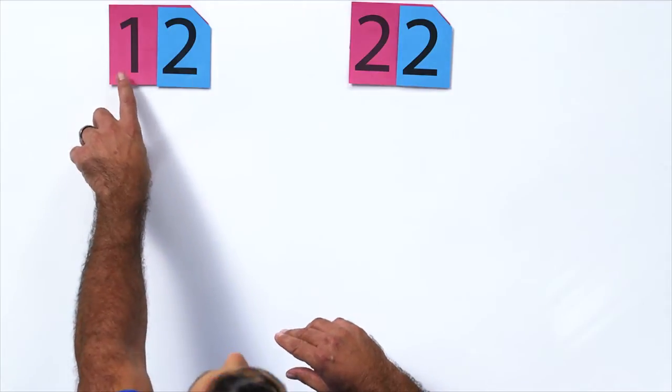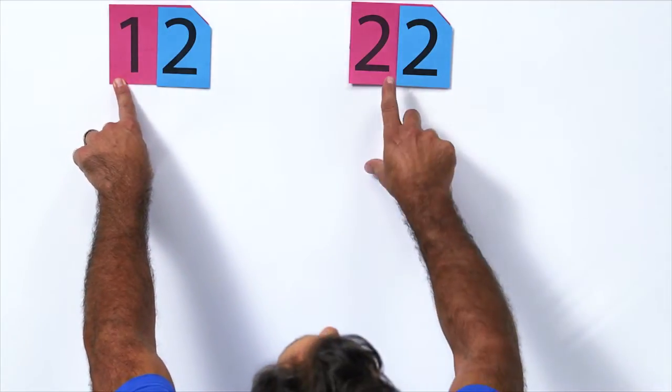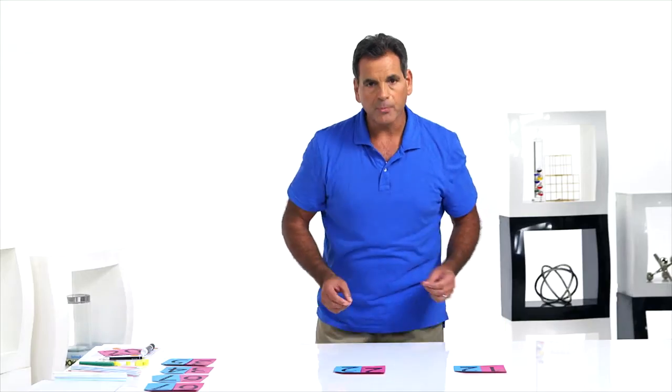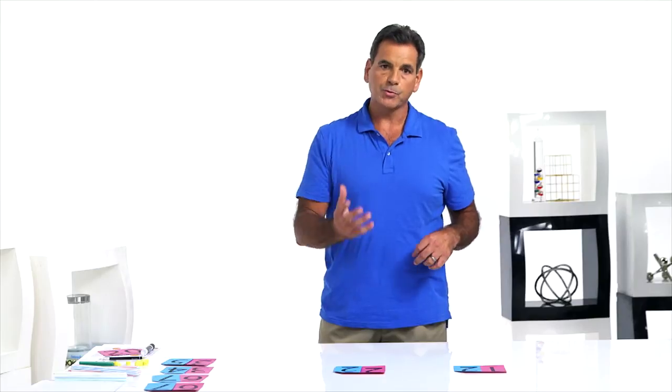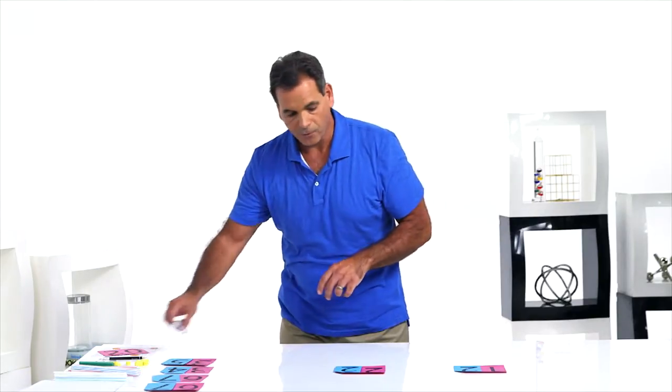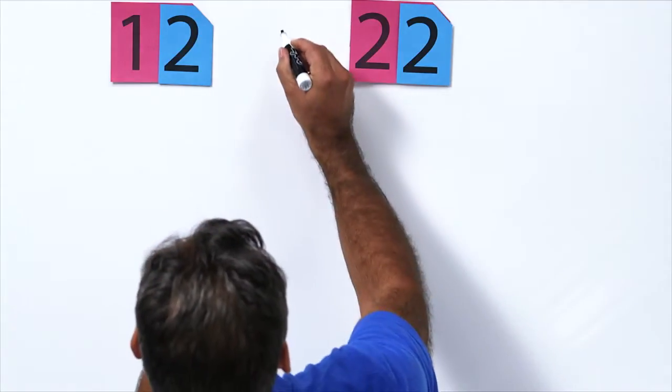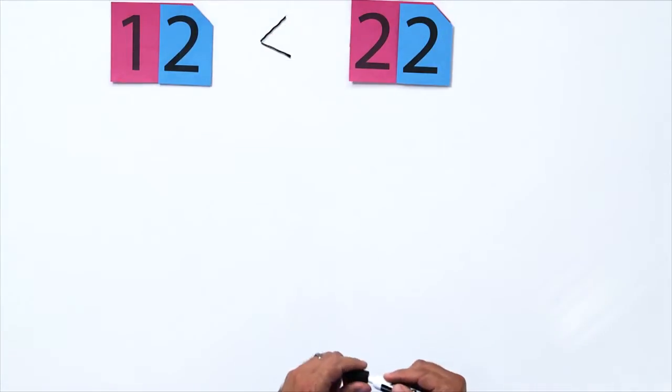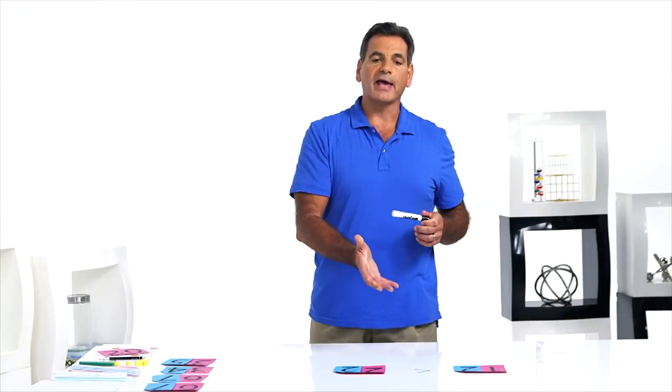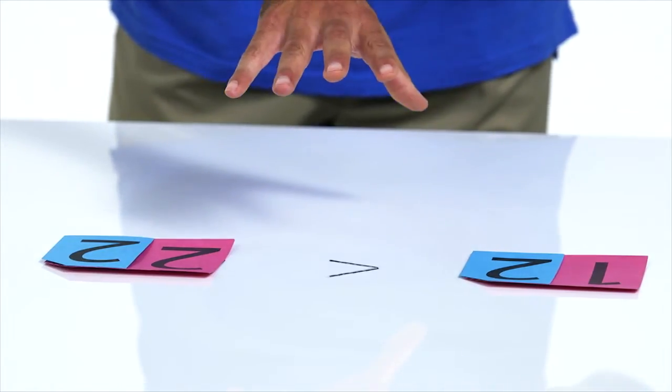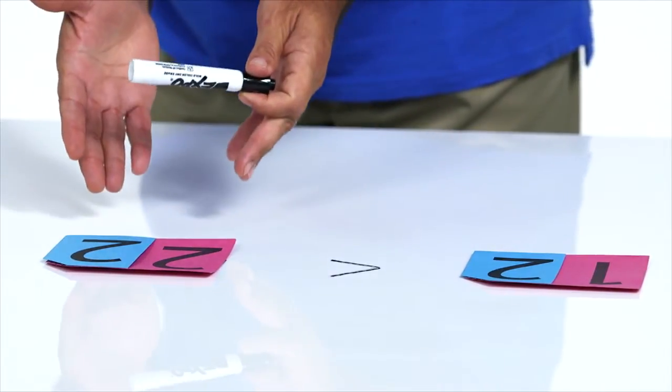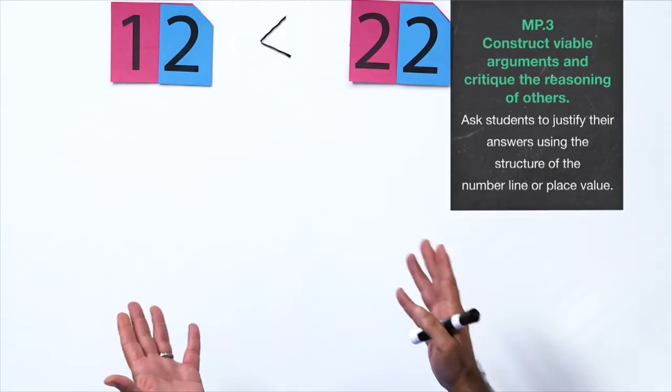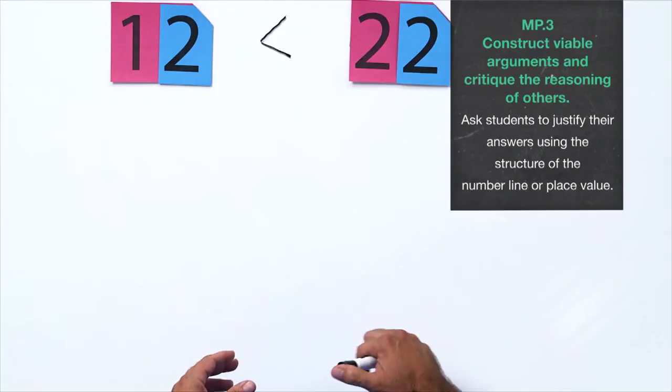Now, comparing these numbers, we simply have to look at the place values, starting on the left at the highest place value. In 12, the tens is a 1. In 22, the tens are a 2. Which number has more tens? Well, 22 then. Therefore, 12 is less than 22. Now, you can use the language, alligator's mouth eats the bigger number, that's fine. But in reality, less than is pointing to the left. And on a number line, numbers to the left are always less than numbers to the right.